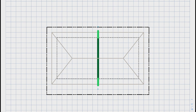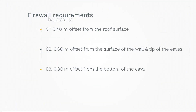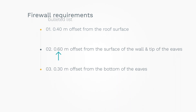Determining the firewall dimensions is easy and straightforward as long as you know the requirements set by the code. For this example, let's consider the following criteria: it should have an offset of 0.40 meters from the surface of the roof; a 0.60-meter offset is needed on both the wall surface and the tip of the eaves; and another offset of 0.30 meters is needed from the bottom part of the eaves downward. Let's picture these requirements based on the given information in the problem.